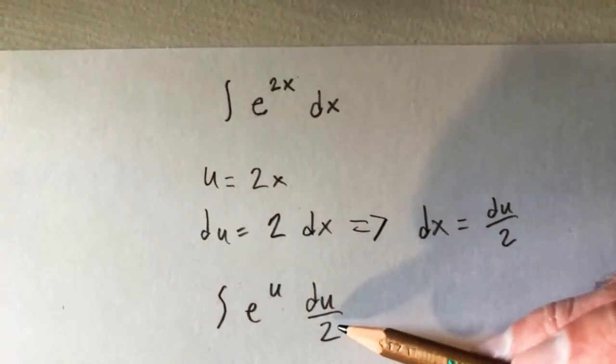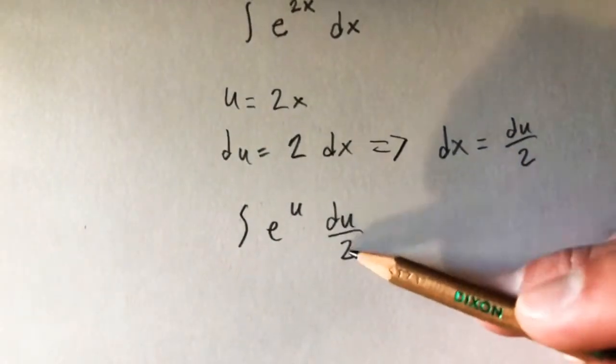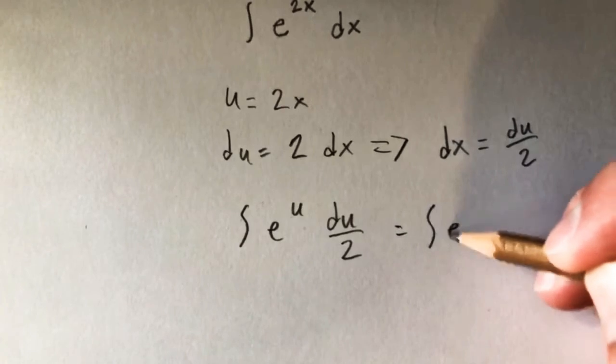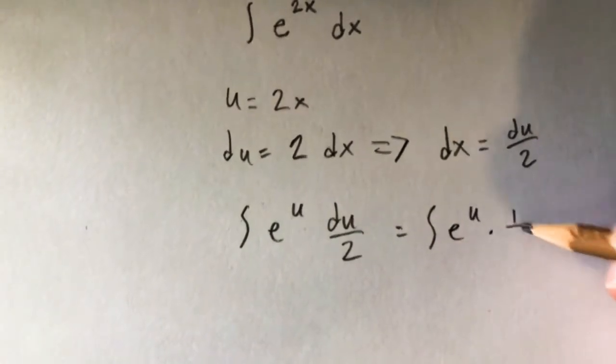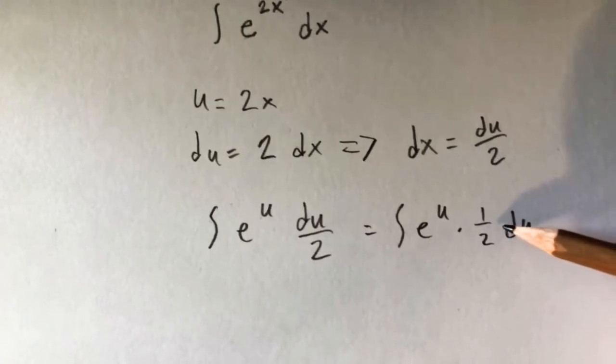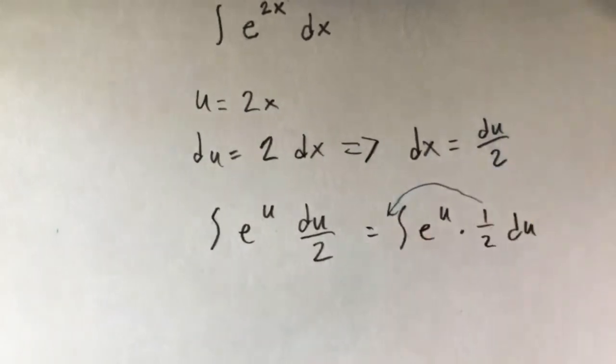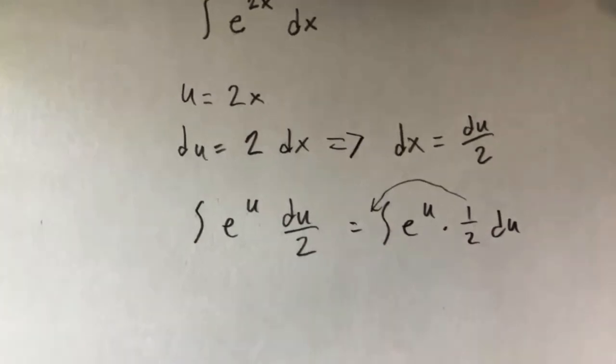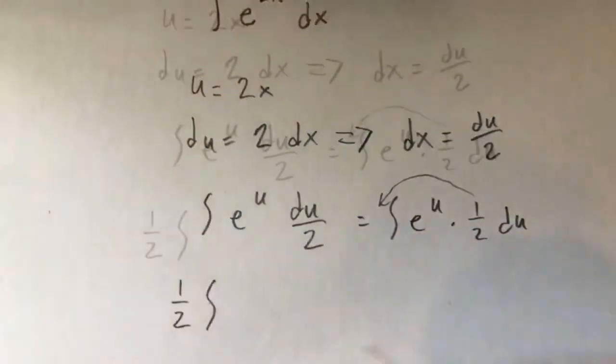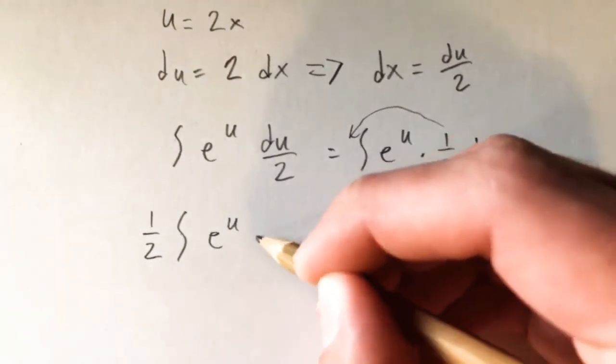So now notice we have this constant, 2 in the denominator is essentially like saying the integral of e to the u times 1 half du. So since we have this constant 1 half, what we can actually do is pull that out of our integral. So bring it out front. So if we do that, we're going to get 1 half times the integral of e to the u du.